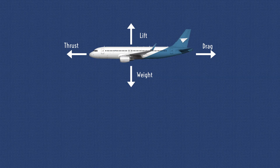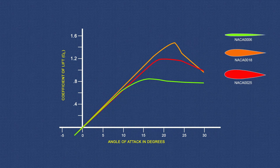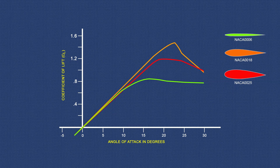The efficiency of a wing is measured in terms of the lift-to-drag ratio. This ratio varies with the angle of attack but reaches a definite maximum value for a particular AOA, at which the wing has reached its maximum efficiency. The shape of the airfoil determines the AOA at which the wing is most efficient and also determines the degree of efficiency. Research has shown that the most efficient airfoils for general use have the maximum thickness occurring about one-third of the way back from the leading edge of the wing.